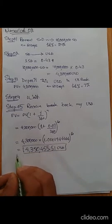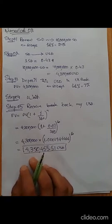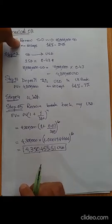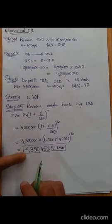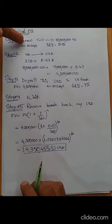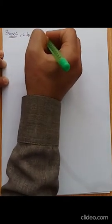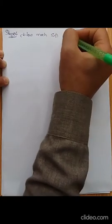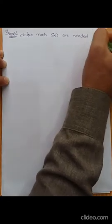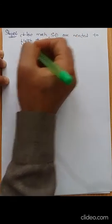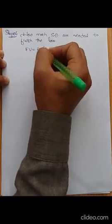Now we need to determine: how much must be paid back to the Singaporean bank to close the loan liability? Then, how much USD must be converted to cover that repayment? And finally, calculate the profit. In step six, we calculate how many Singapore dollars are needed to finish the liability, using the time value of money formula.